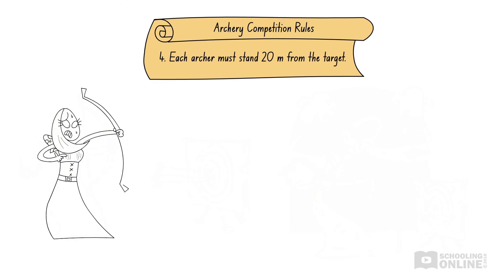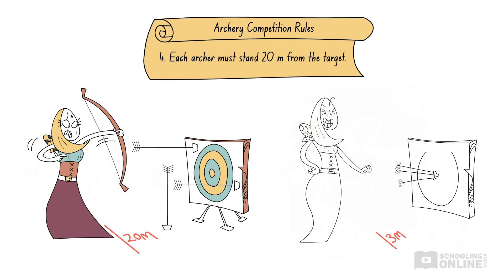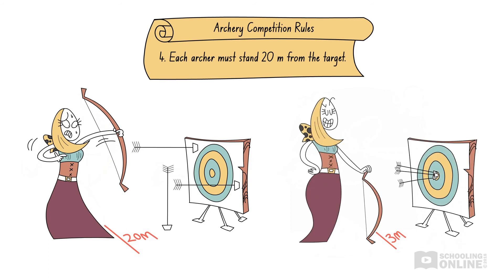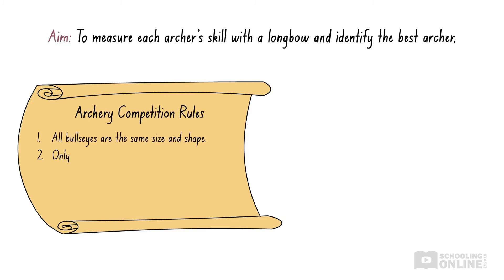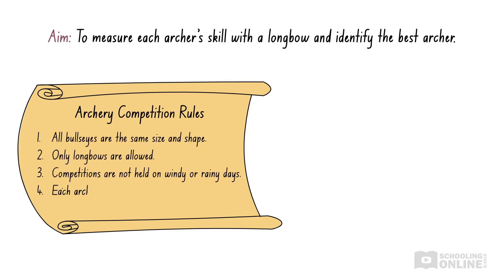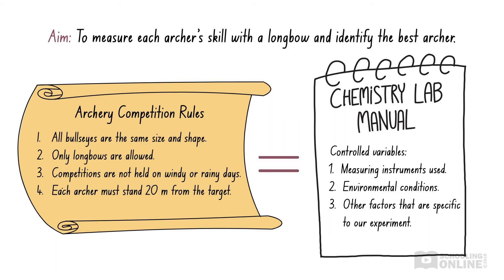The fourth rule asserts that each archer must stand 20 metres from the target. Standing closer to the target will make it easier for them to aim and hit the bullseye. Therefore, we can only reach fair conclusions if all archers stand at the 20-metre line. These rules sound like a list of controlled variables — all of them must be followed so that we can reach meaningful conclusions about each archer's shooting skill. Similarly, chemistry experiments must have controlled variables so that we can draw meaningful conclusions about how our independent variable affects our dependent variable.